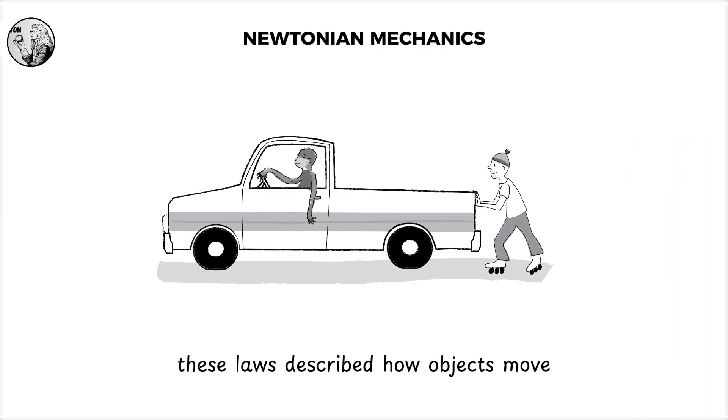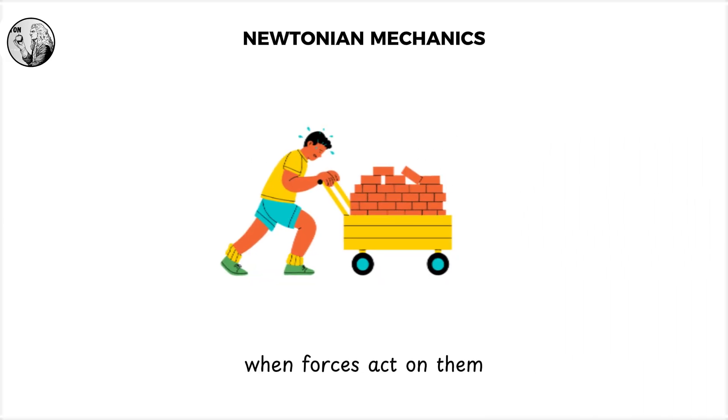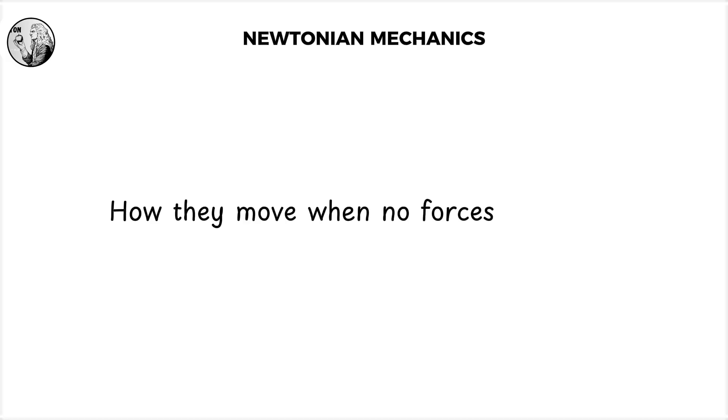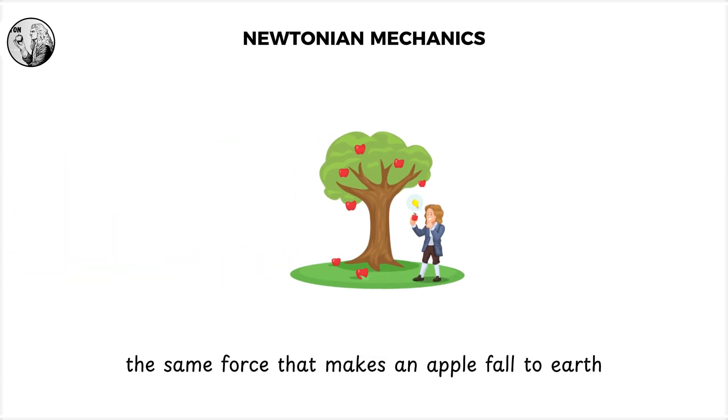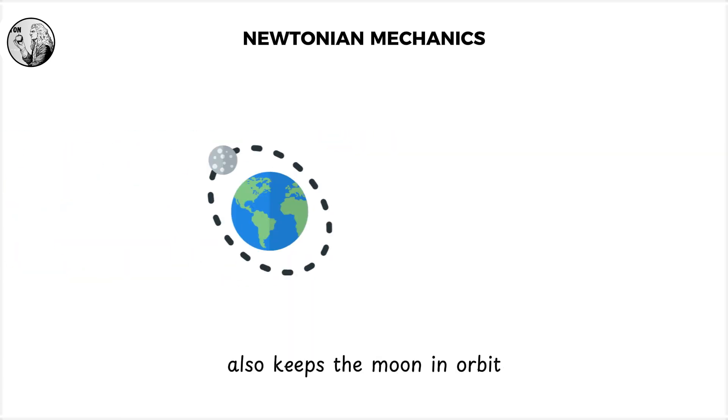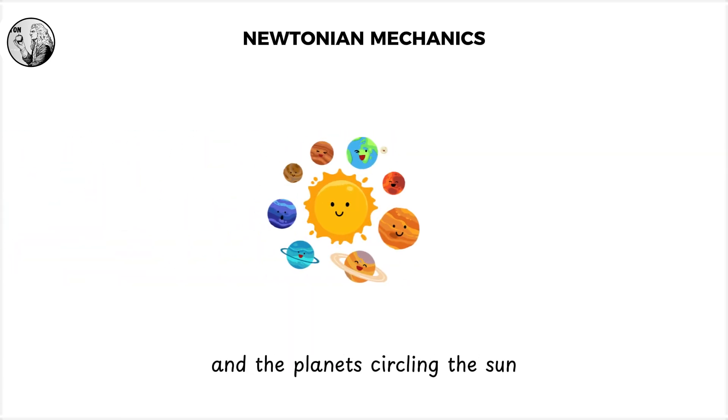These laws described how objects move when forces act on them, and more importantly, how they move when no forces act at all. But his real game changer was the law of universal gravitation. The same force that makes an apple fall to Earth also keeps the moon in orbit, and the planets circling the sun.